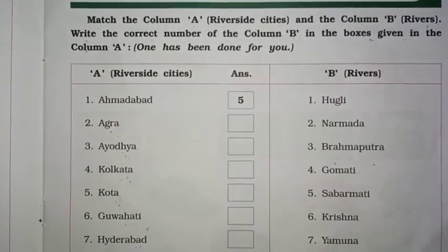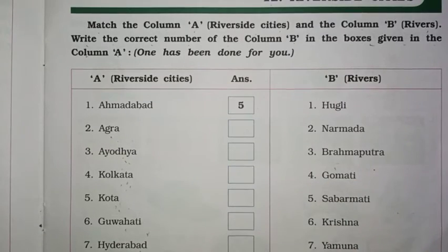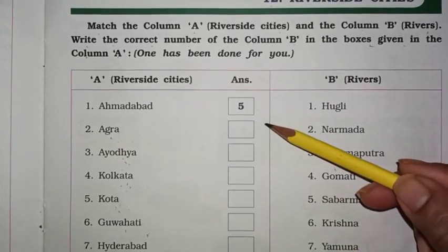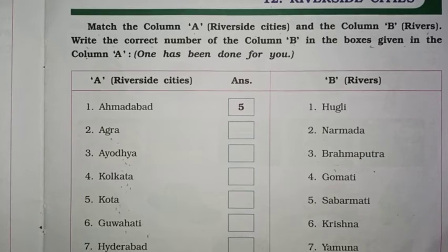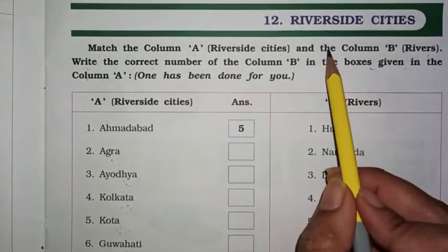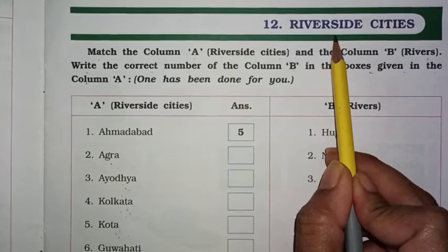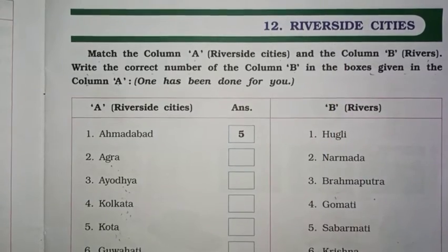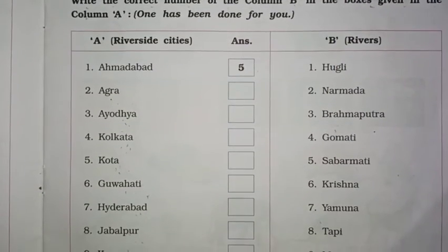यहाँ पे देखो, कुछ states के नाम दिये गये हैं, और यहाँ पे हमें box में उसको कौनसी river के सामने रहते हैं — river side यानि कि river के पास रहते हैं — वो हमें यहाँ पे उस river का number लिखना है।